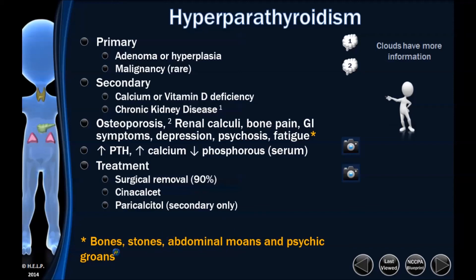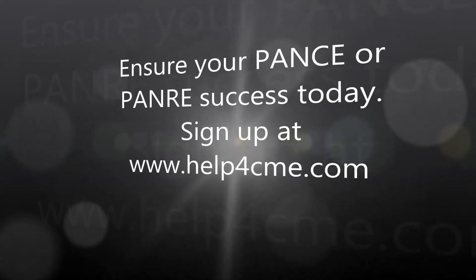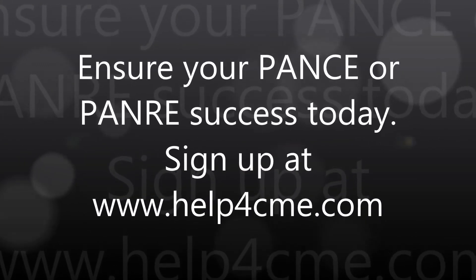Remember the specific symptoms. Bone, stones, abdominal moans, and psychiatric overtones. To differentiate hypo from hyperparathyroidism: number one, low hormone means low calcium; high hormone means high calcium. For hypoparathyroidism, remember tingling, tetany, and Trousseau's — along with Trousseau's and Chvostek's signs. For hyperparathyroidism, bones, stones, abdominal moans, and psychiatric overtones are very important to remember.